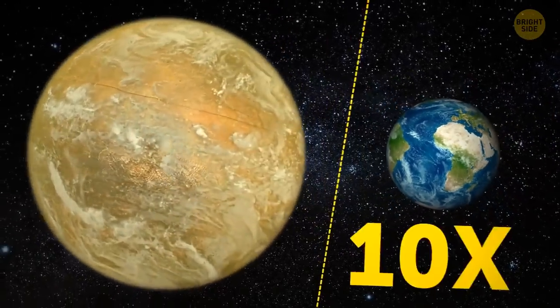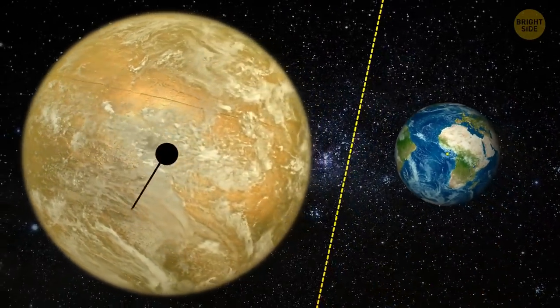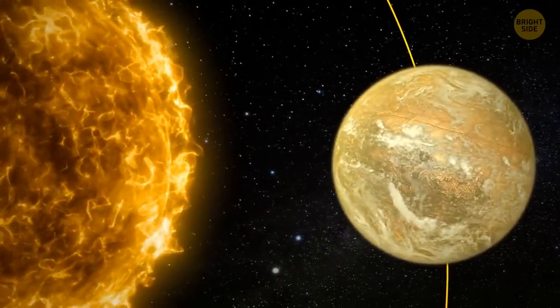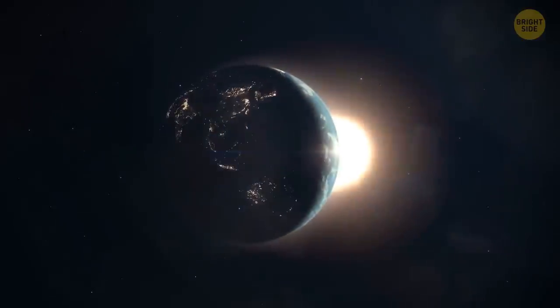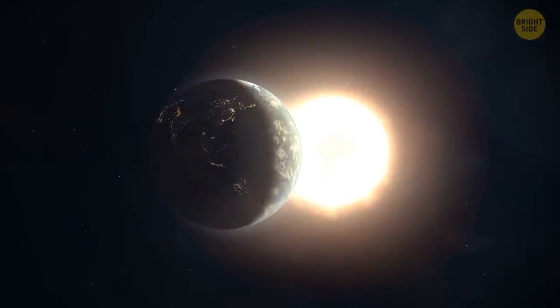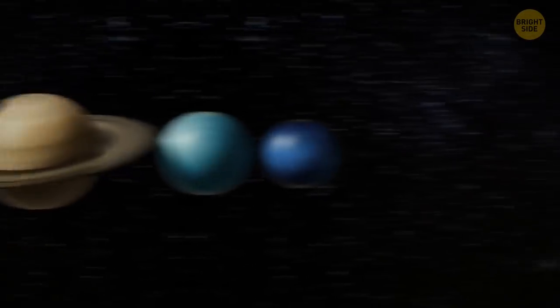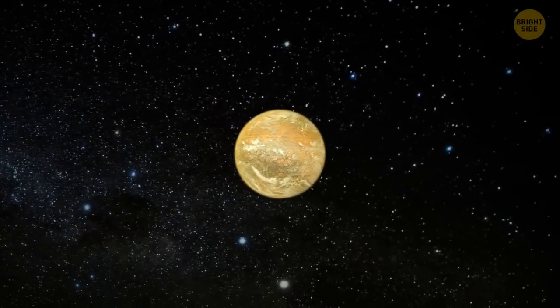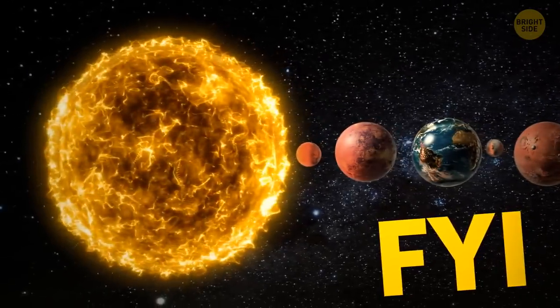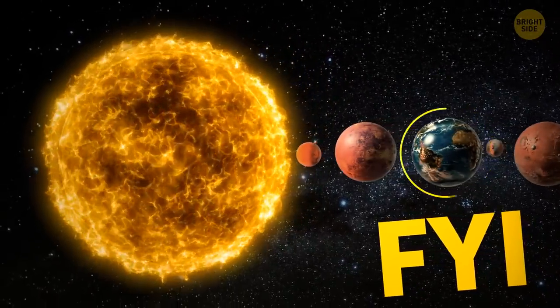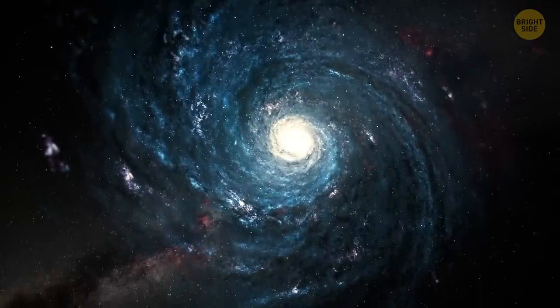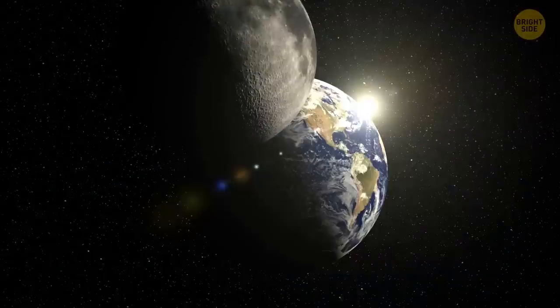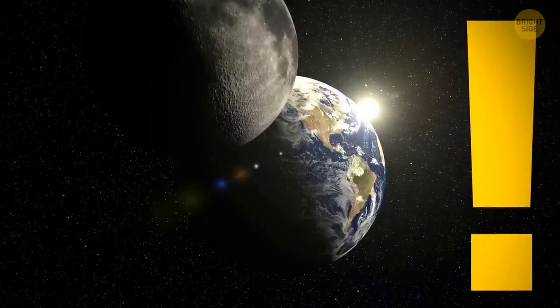Planet X, if it exists, is 10 times the size of Earth and 4 times its radius. It would take at least 10,000 years for the planet to orbit the Sun. And it would sit over 200 times further out than our home planet. That's 600 astronomical units from the center of the solar system. FYI, an astronomical unit equals the distance between the Earth and the Sun. But while that sounds super far away, it's actually not. The distance between space bodies is usually measured in light years. And an astronomical unit is a much smaller unit of measurement.